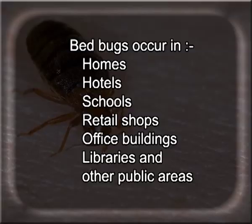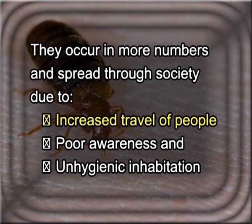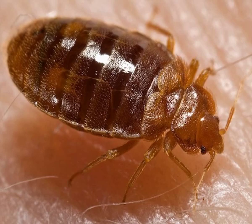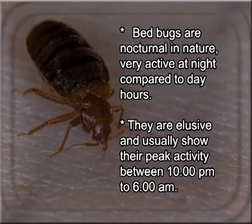Occurrence of bed bugs: Bed bugs occur in homes, hotels, schools, retail shops, office buildings, libraries and other public areas. They occur in more numbers and spread through society due to increased travel of people, poor awareness and unhygienic inhabitation. Bed bugs are parasites that feed exclusively on the blood of warm-blooded animals and are best adapted to human environments. The name bed bug is derived mainly from their preferred habitat — warm houses and bedding or sleep areas. Bed bugs are nocturnal in nature, very active at night compared to day hours.